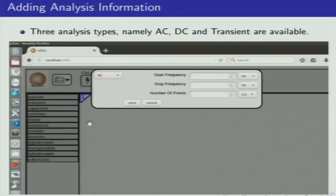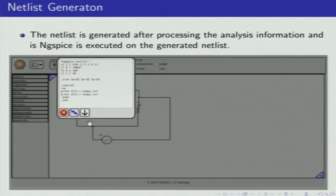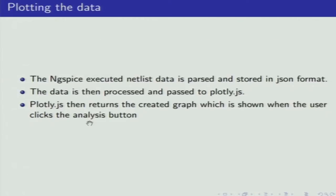Three analysis types, namely AC, DC and transient, are available. The net list is generated after processing the analysis information and NGSpice is executed on the generated net list. The NGSpice-executed net list data is parsed and stored in JSON format. The data is then processed and passed to Plotly. Plotly then returns the created graph, which is shown when the user clicks the analysis button.